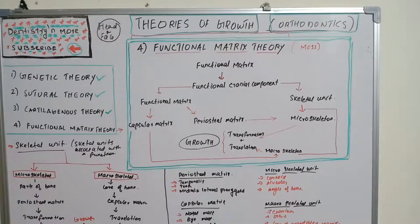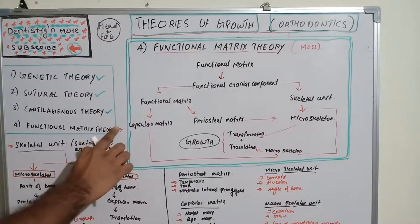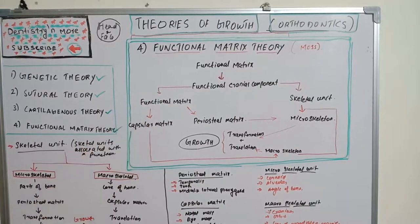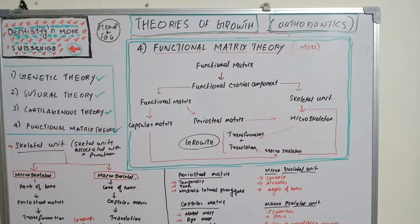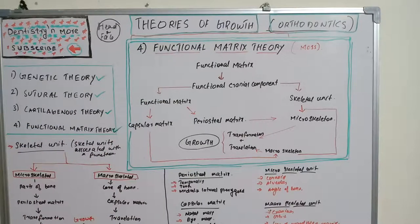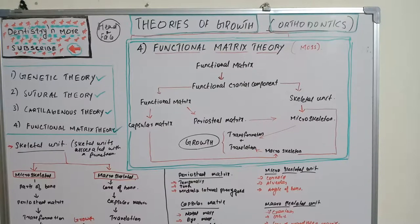So that's all about the major theories of growth. We have covered genetic theory, sutural theory, cartilaginous theory, and functional matrix theory — the four important theories commonly asked in university exams. Functional matrix theory is a little complicated, but it has just two parts, and if you have the flowchart in your mind, it will be easy. Do mention in the comment box if you have any particular chapter or subject you'd like covered. Thank you.